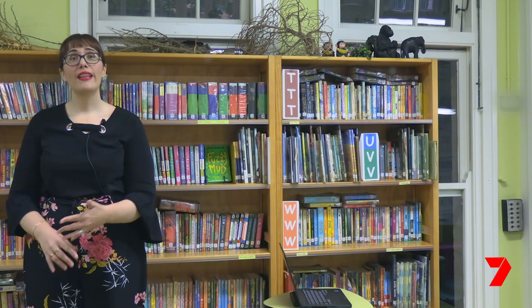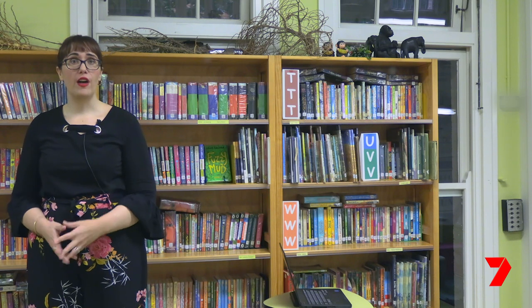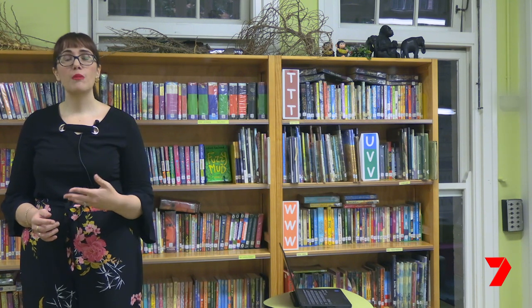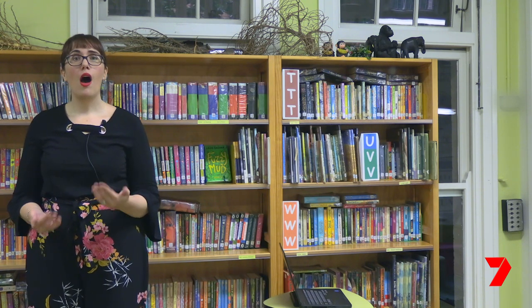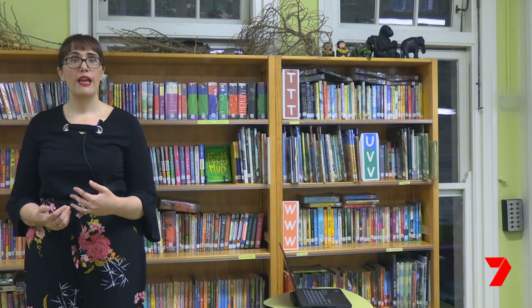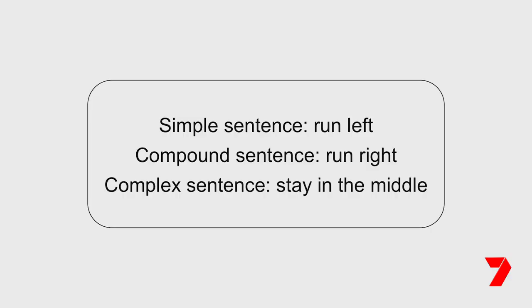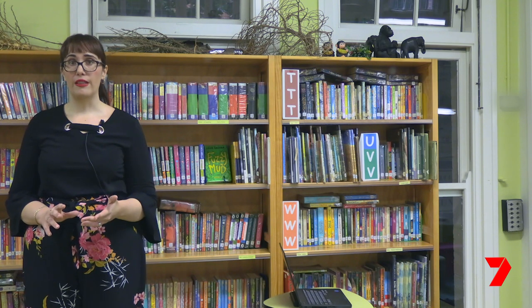Let's play a game to see if we can identify simple, compound, and complex sentences. To play this game, you will need some space to move. I'm going to read you a sentence. If you think it is a simple sentence, you will need to jump up and run to the left side of the room. If it's a compound sentence, run to the right of the room. If it's a complex sentence, stand in the middle of the room. Let's practice.